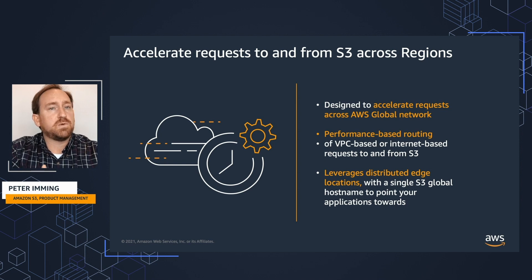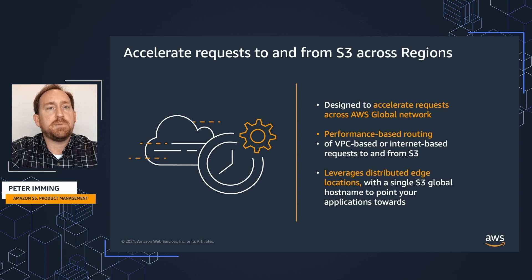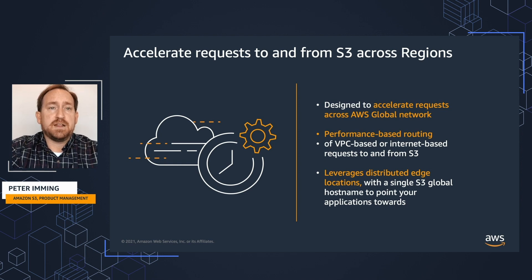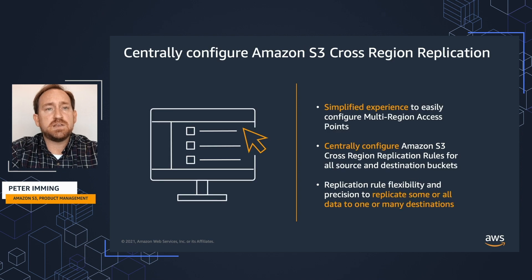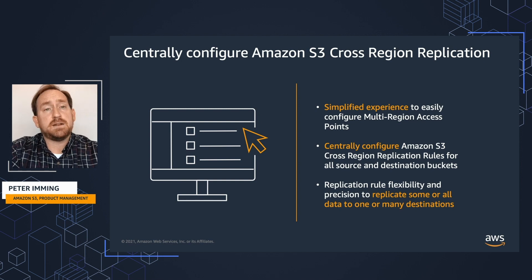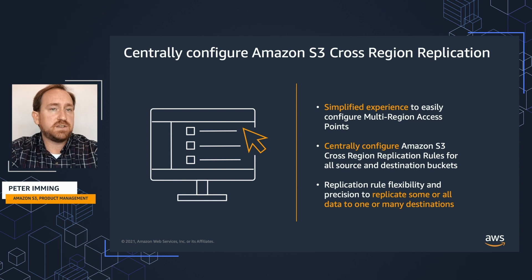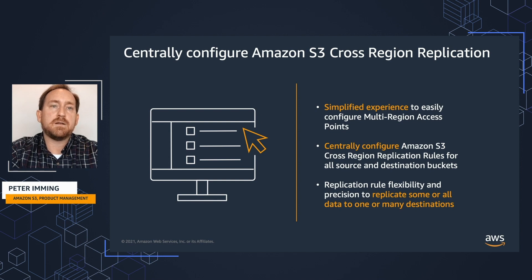You get the best of both worlds, whether it's a VPC-based request originating in a VPC-based application, or internet-based requests for reads or writes, puts or gets. It's going to leverage the global footprint and presence of the Global Accelerator network to on-ramp those requests. When we configure a multi-region access point, we do that centrally. We can also optionally choose to centrally configure the replication between the buckets behind a multi-region access point — we can choose to replicate some of the data, all of the data, or none of the data — and still get the benefits of dynamic global routing to the bucket with the lowest latency.